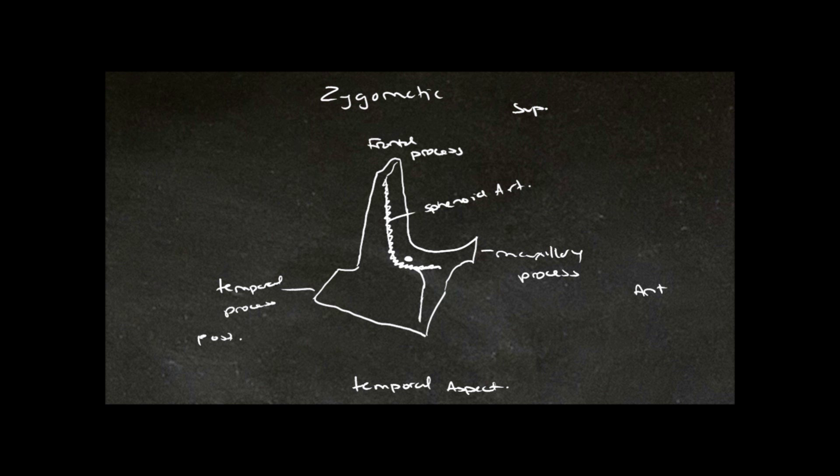There is also a foramen on the inside of this bone. This is called the zygomatico-temporal foramen. And with these two features we can tell that this is the temporal aspect of this bone.